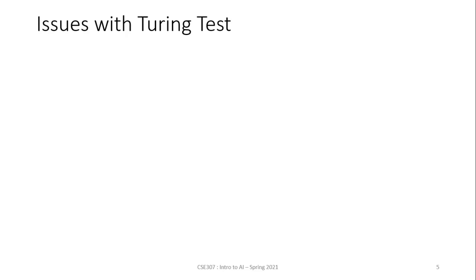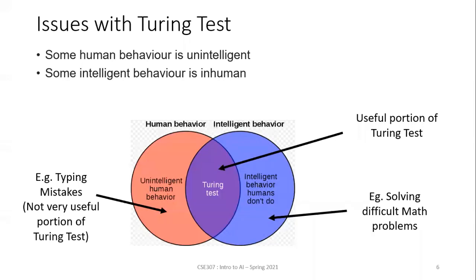Looking at this particular diagram: some parts represent human behavior that is unintelligent — for example, typing mistakes. Some parts represent intelligent behavior that humans don't have, like solving difficult math problems. And of course there are parts where we are intelligent, and that's the useful portion the Turing test captures. So the Turing test has its issues.